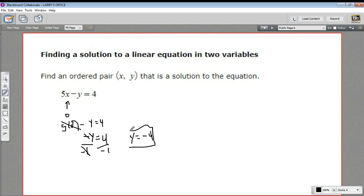But that's our value, y equals negative 4. So our solution here is x is 0 and y is negative 4. That is an ordered pair that satisfies this equation, so we say it's a solution to the equation.